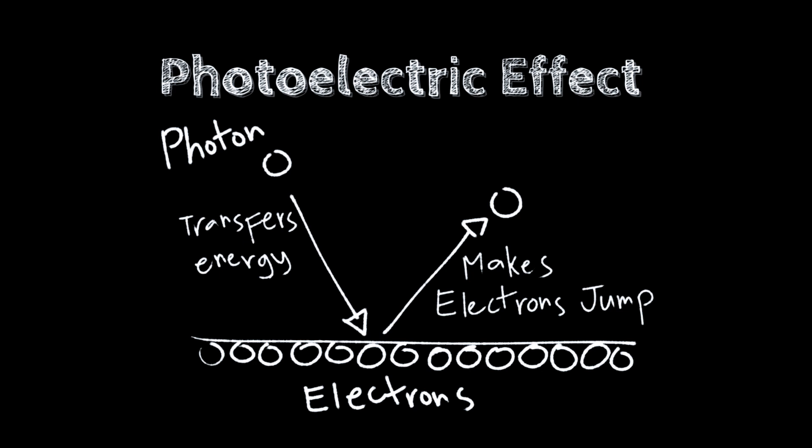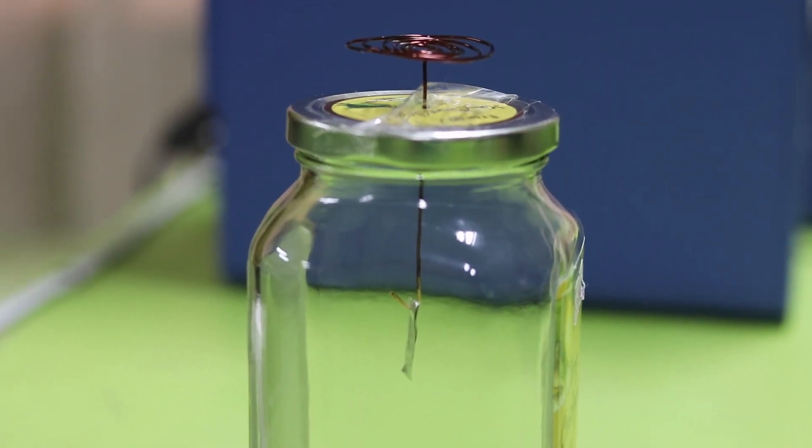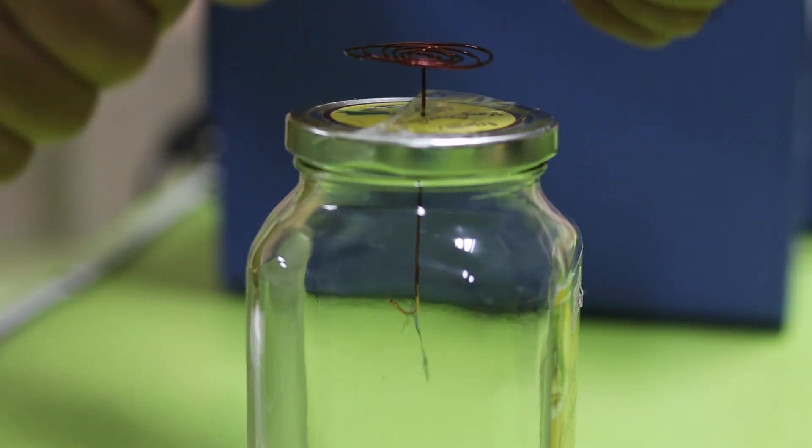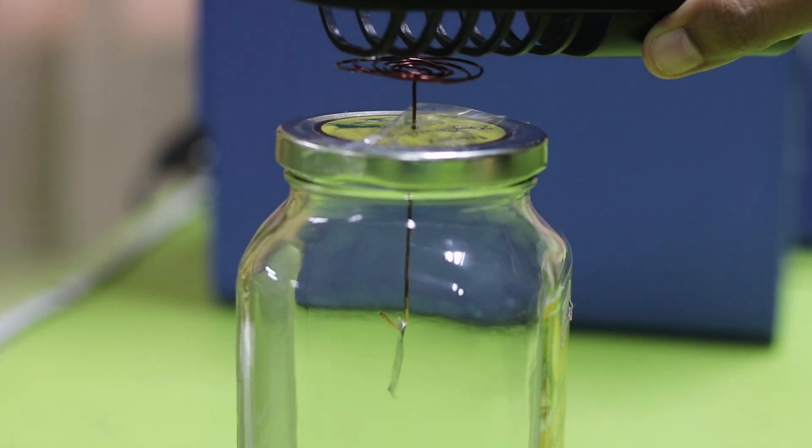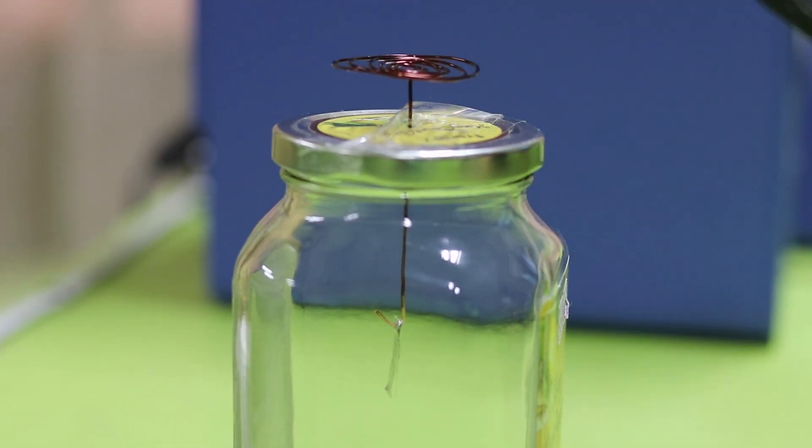We can see in this homemade electroscope that it is negatively charged. But when we shine UV light on it, it removes the excess electrons.